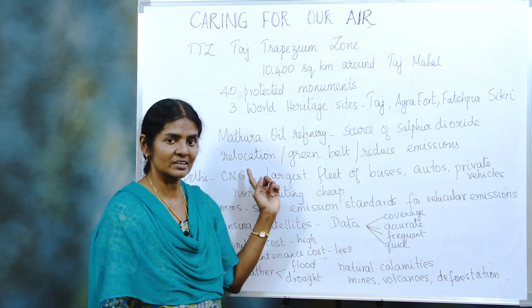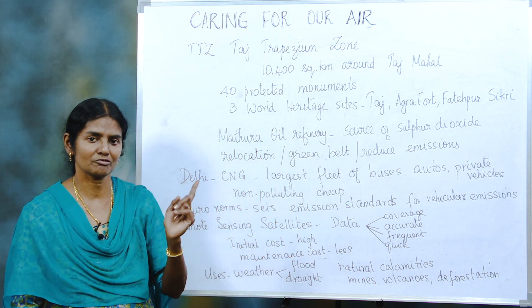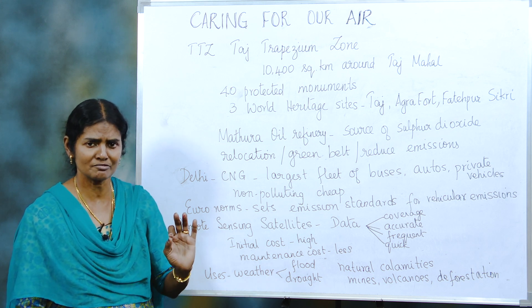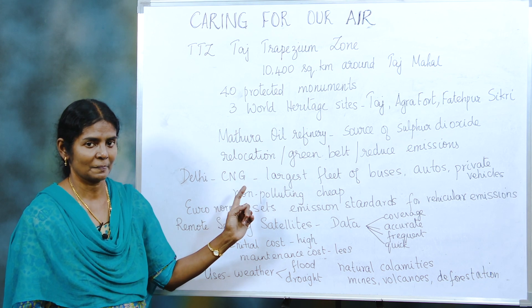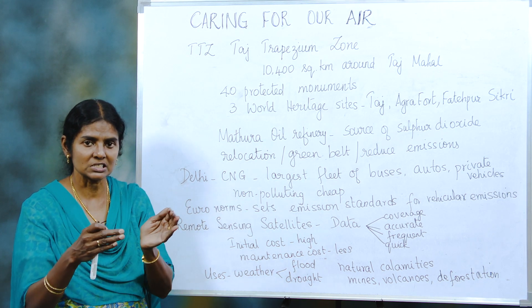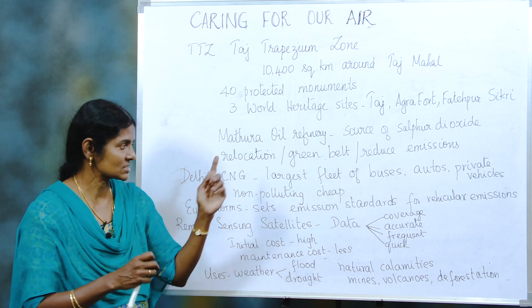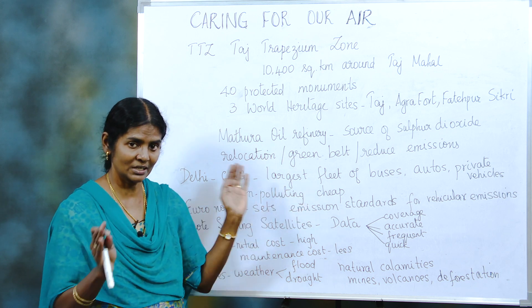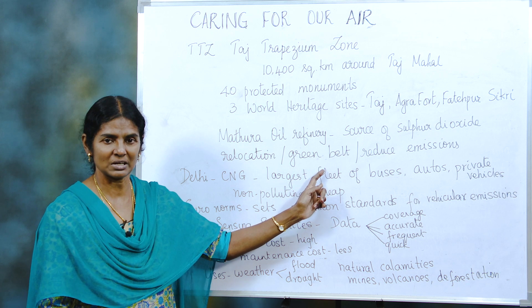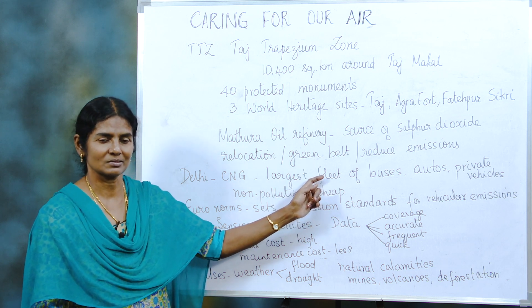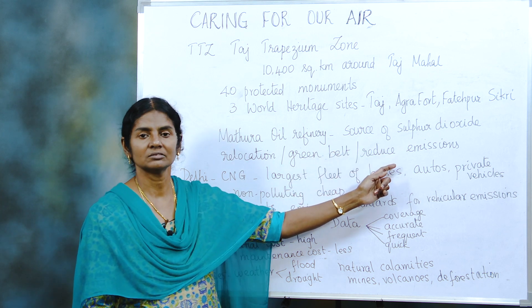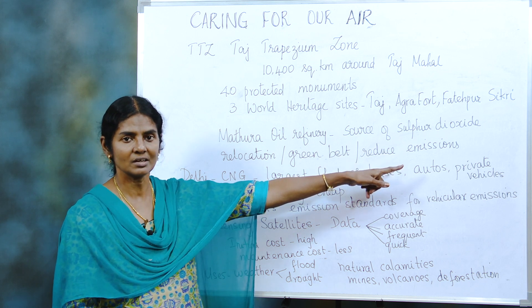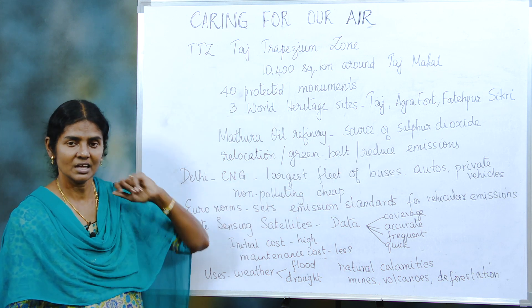So what is the TTZ doing about it? They are relocating all industries — there are about 512 industries in this area. They don't want any of these industries near the Taj Mahal, so there is relocation. Additionally, they are building a green belt, meaning afforestation — growing trees. And smaller industries that remain must reduce their emissions. These are the three things under the TTZ.